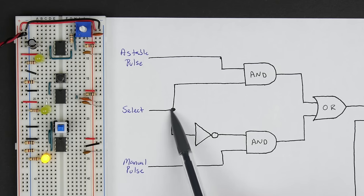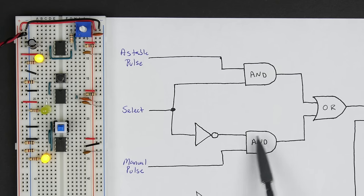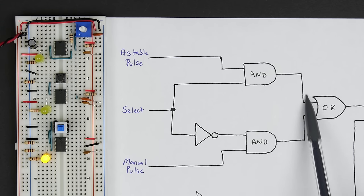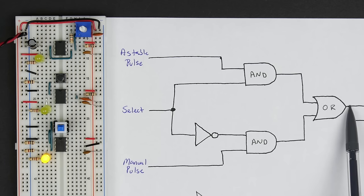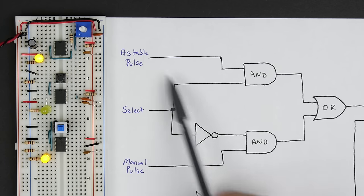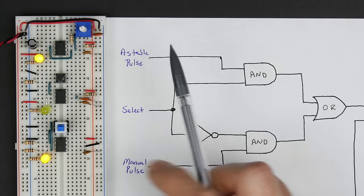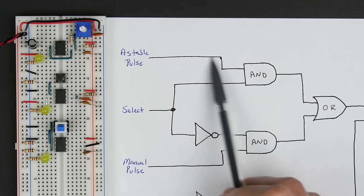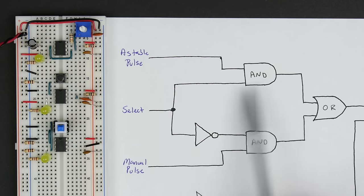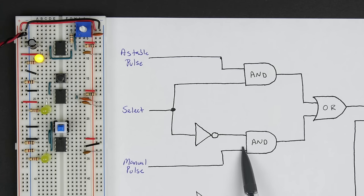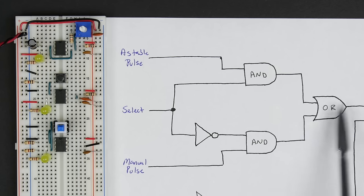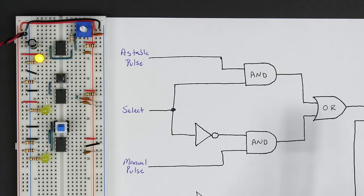If we look at the other AND gate, our select is inverted, so we have a 0 coming into that AND gate, and no matter what the input is, it's always going to output a 0. So at the OR gate, we've got our clock pulse on one input and a 0 on the other — the clock pulse just flows right through. If we turn the select off, we have a 0 coming in and the clock pulse won't come out. On the other hand, when we invert the select we have a 1, so if our manual pulse is a 1 we get a 1 out; if it's a 0 we get a 0 out. So when the select is off and we push our manual pulse, the manual pulse comes out.